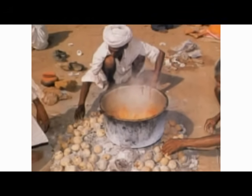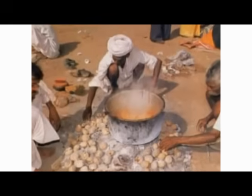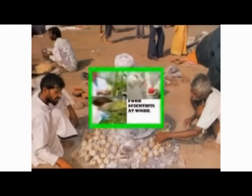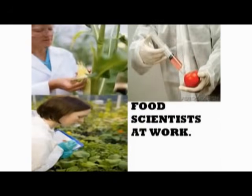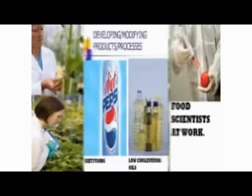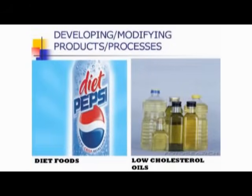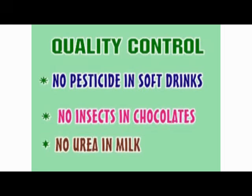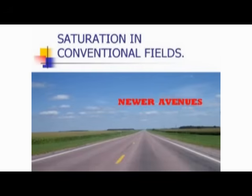Many people are under the misconception that a food technologist mainly deals with cooking — of course not. He is a scientist. His typical work activities include developing new and modifying existing products and processes, and quality control right from raw material to finished products.